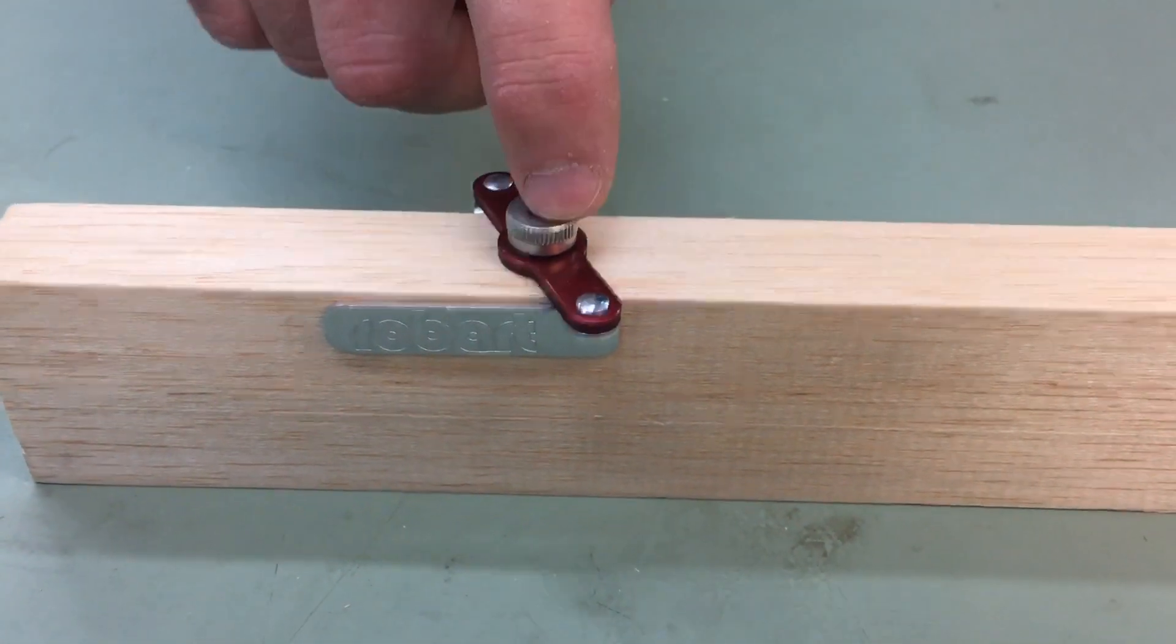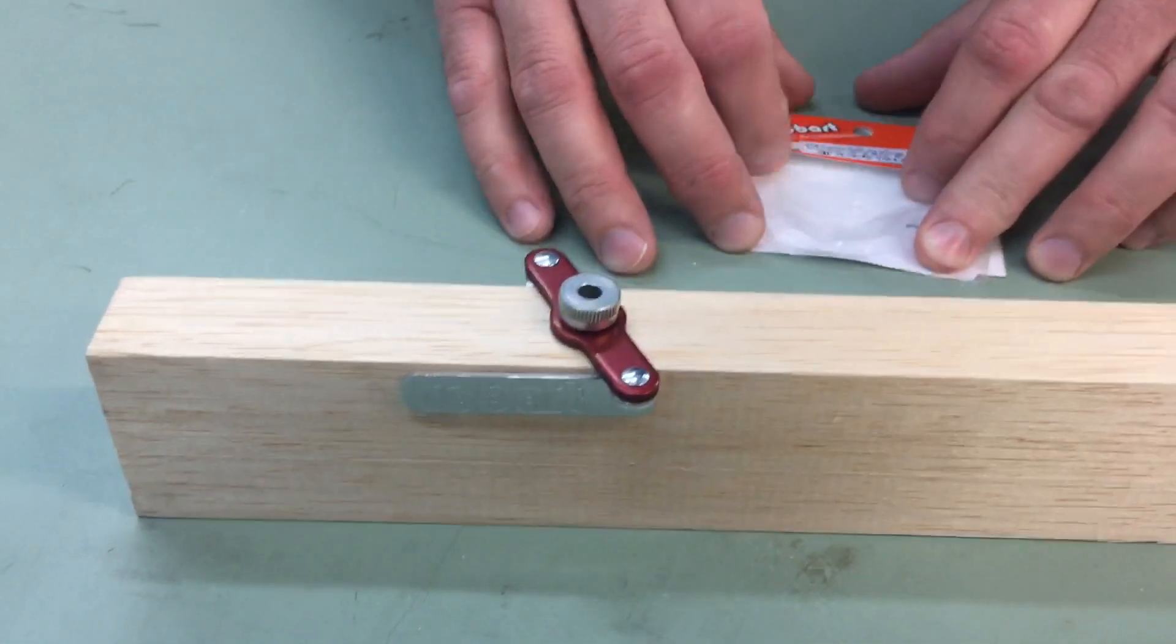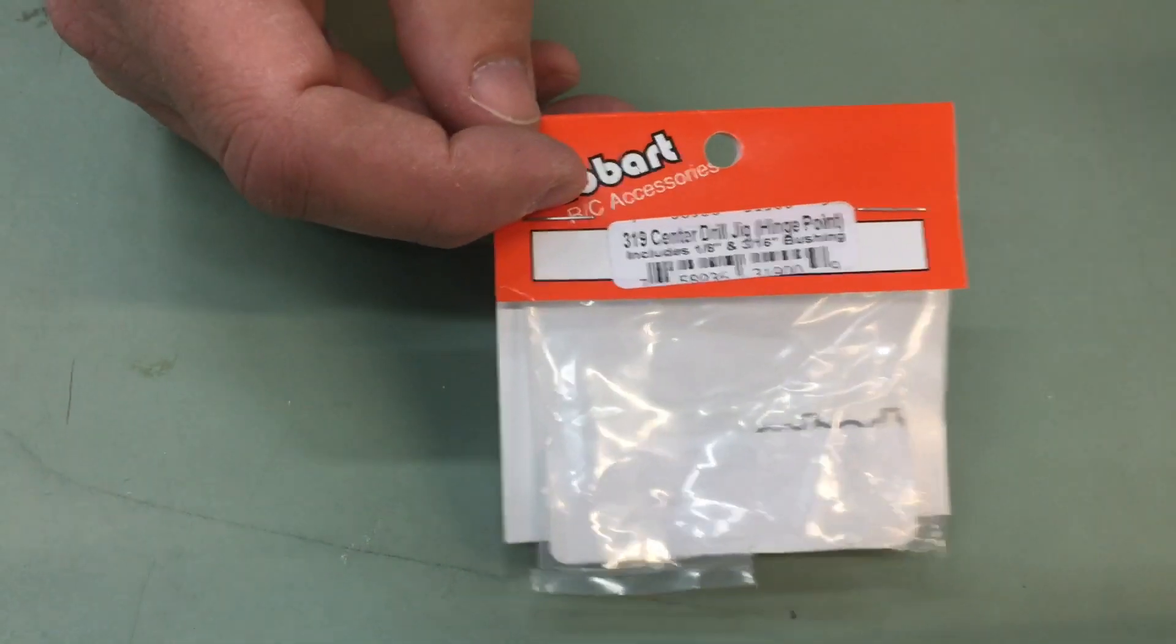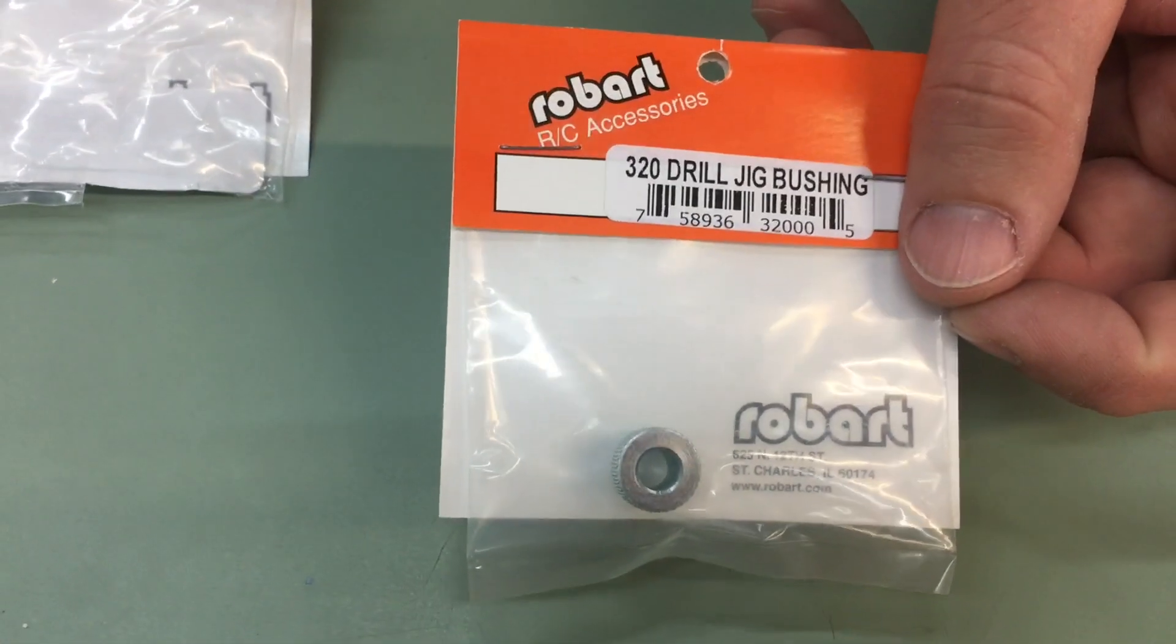And again, this is available. The 319 does come with the eighth inch and three sixteenths bushings. We do offer it with a quarter inch bushing sold separately.